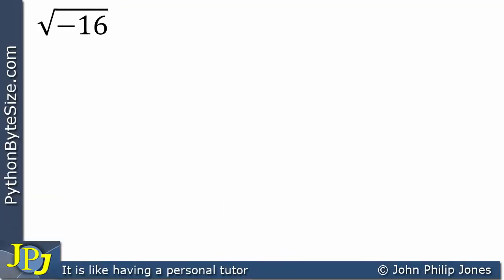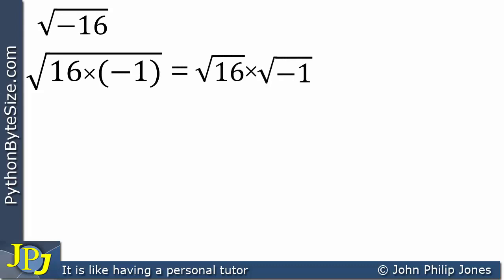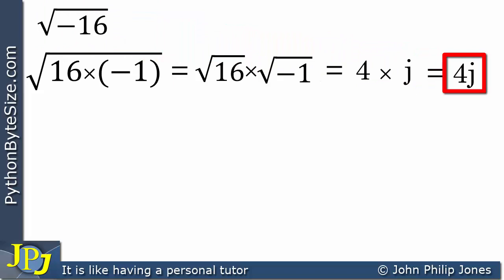Let's have a look at another example: the square root of minus 16. I can write this down as 16 times minus 1, and I can split this up as the square root of 16 times the square root of minus 1. Obviously the square root of 16 is 4, and I can replace the square root of minus 1 by j, so that equals 4j. The square root of minus 16 is 4j, where 4j is the imaginary component of a complex number, and we use j because we're using Python.